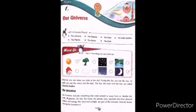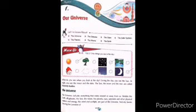To teach you SSD of class 3, this is your SSD book. So let's start your first chapter: Our Universe. The topics are the universe, the galaxies, the stars, the solar system, the planets, the moons, and lastly the earth.